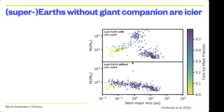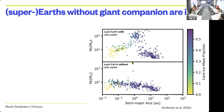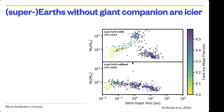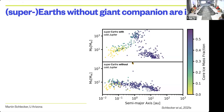Everything I'm showing from now—the distributions—these are not extreme cases, but our nominal disk mass, disk size, and inner edge distributions that we always use.